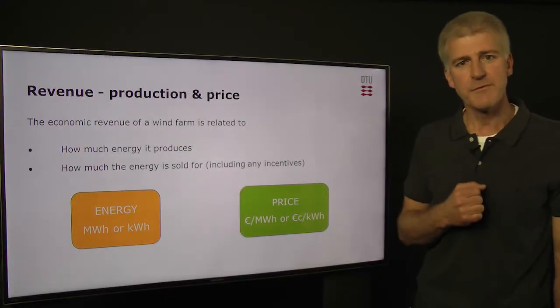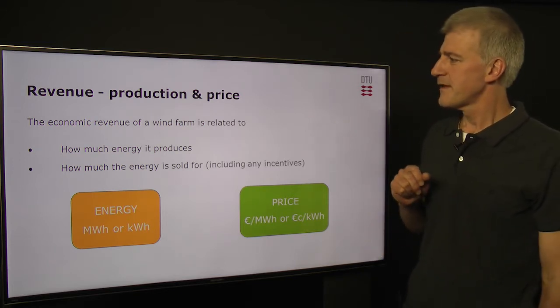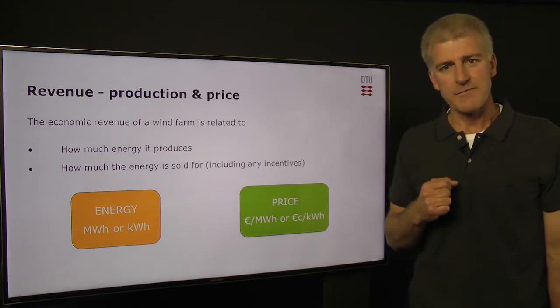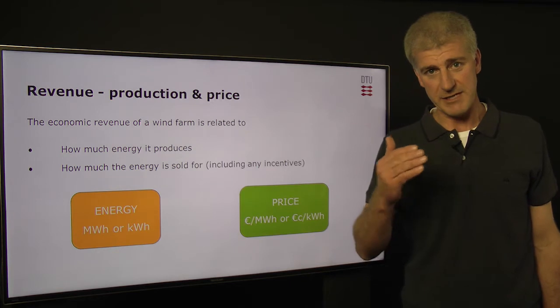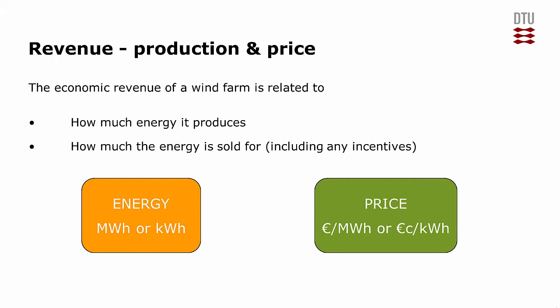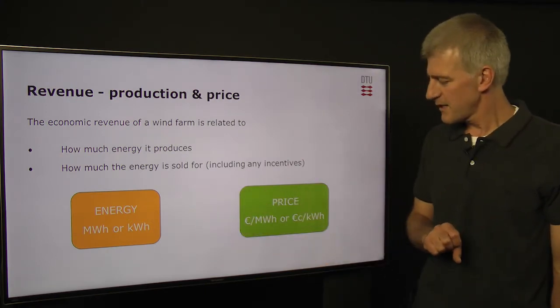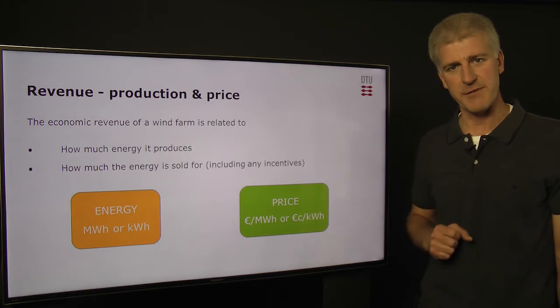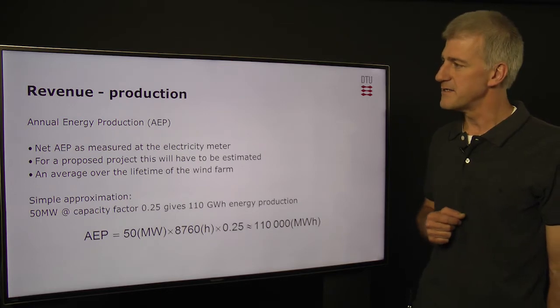So let's look at revenue. What is it? It's got two components: production and price. The economic revenue of a wind farm is, of course, related to how much energy it produces — how much energy actually goes through the meter and into the public grid — and how much that energy is actually sold for. So we have these two components: the energy in megawatt hours and the price in euros per megawatt hour.